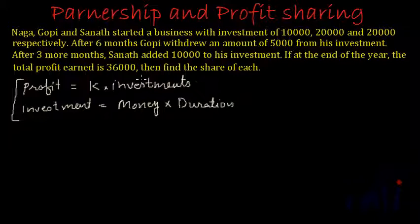In the next sentence the complications start. After six months, Gopi withdrew an amount of 5,000 from his investment. Gopi, who had initially invested 20,000, withdrew 5,000, so after six months Gopi's investment becomes 15,000. And after three more months, Sanat added 10,000 to his investment. So Gopi is actually reducing his investments and Sanat is actually increasing his investments in the business.